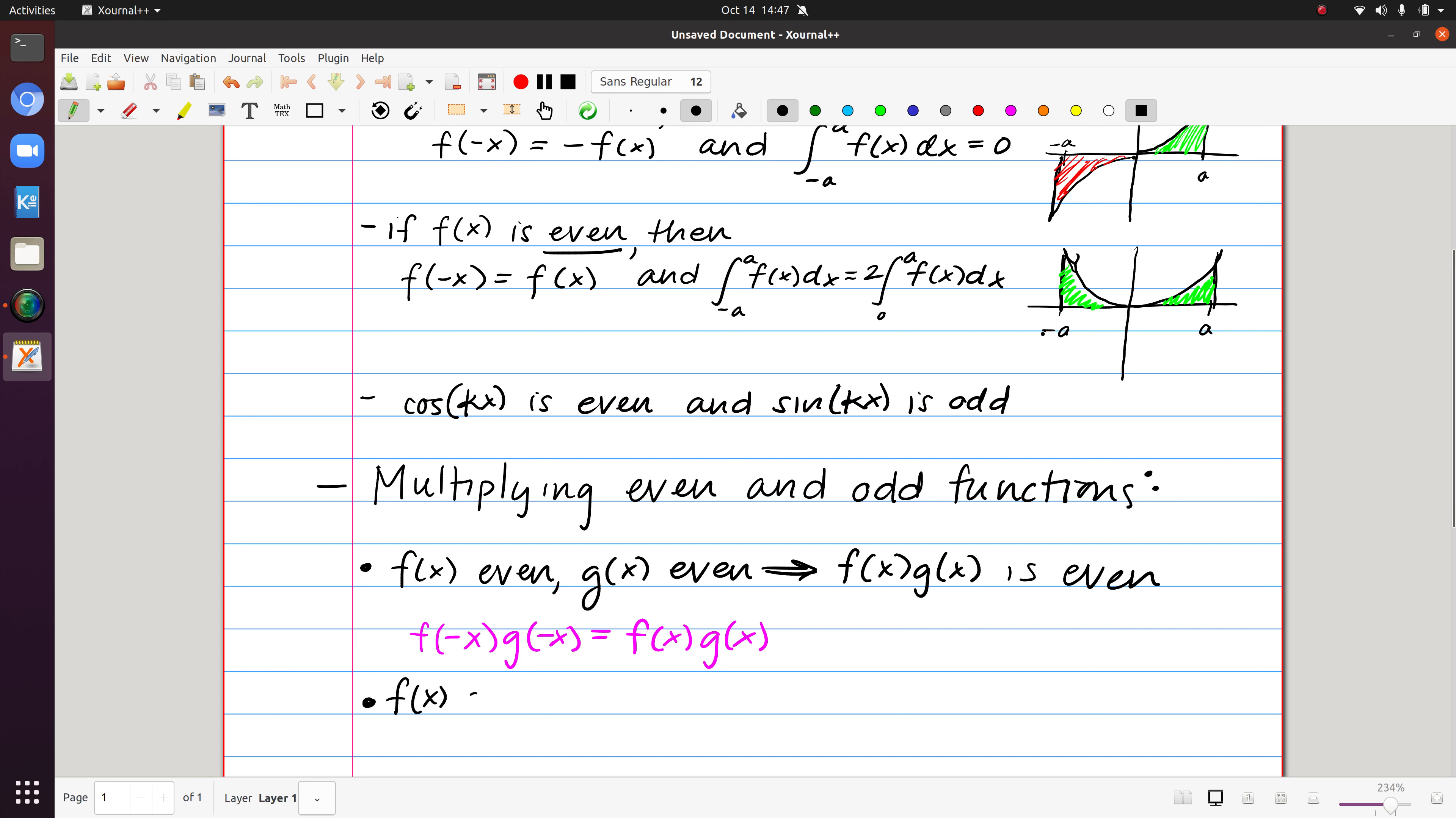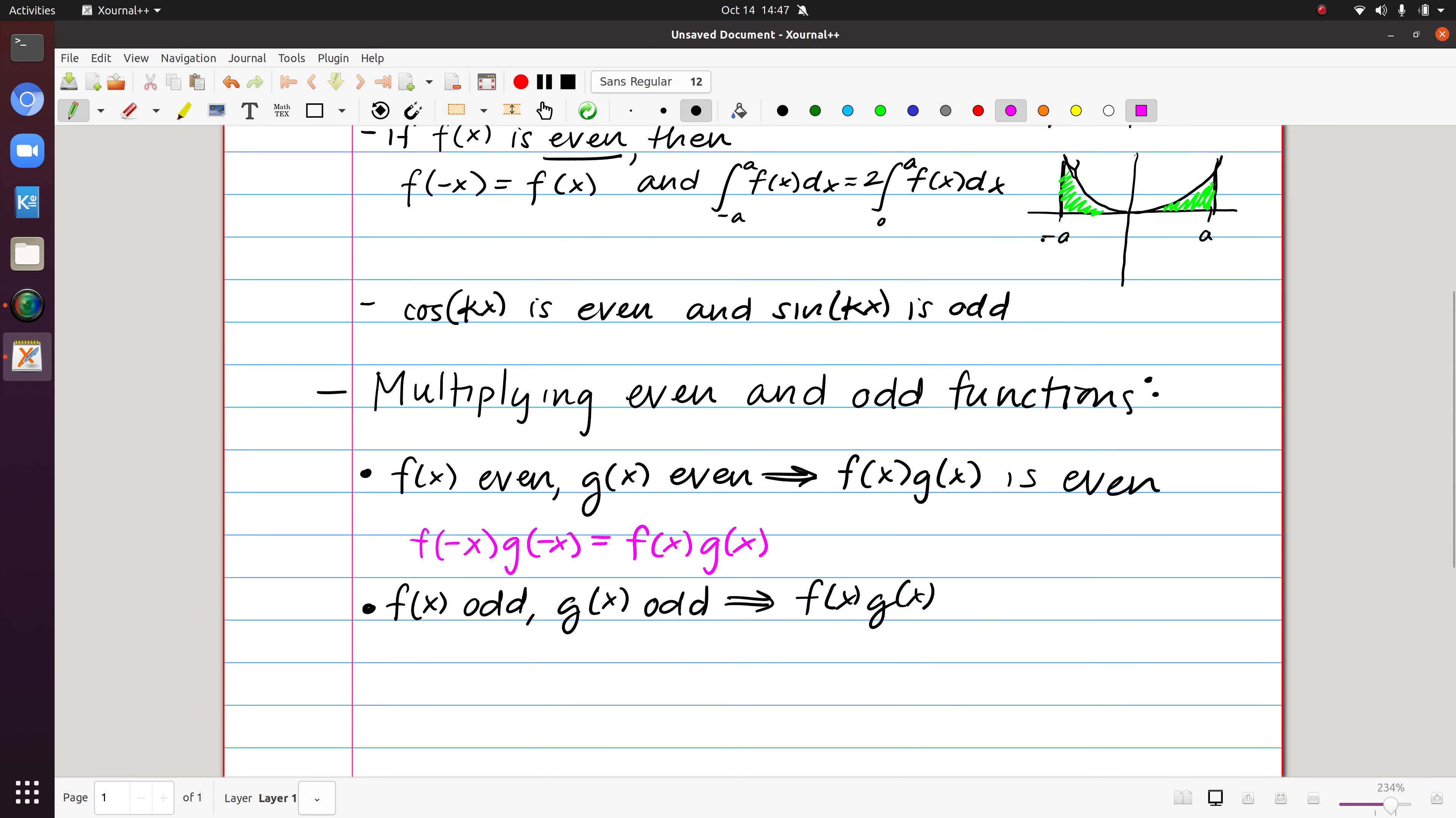If f of x is odd and g of x is odd, and we want to consider what we can say about the product. In this instance, if I were to plug in minus x to both functions, because they are odd, that's going to be equivalent to negative f of x times negative g of x.